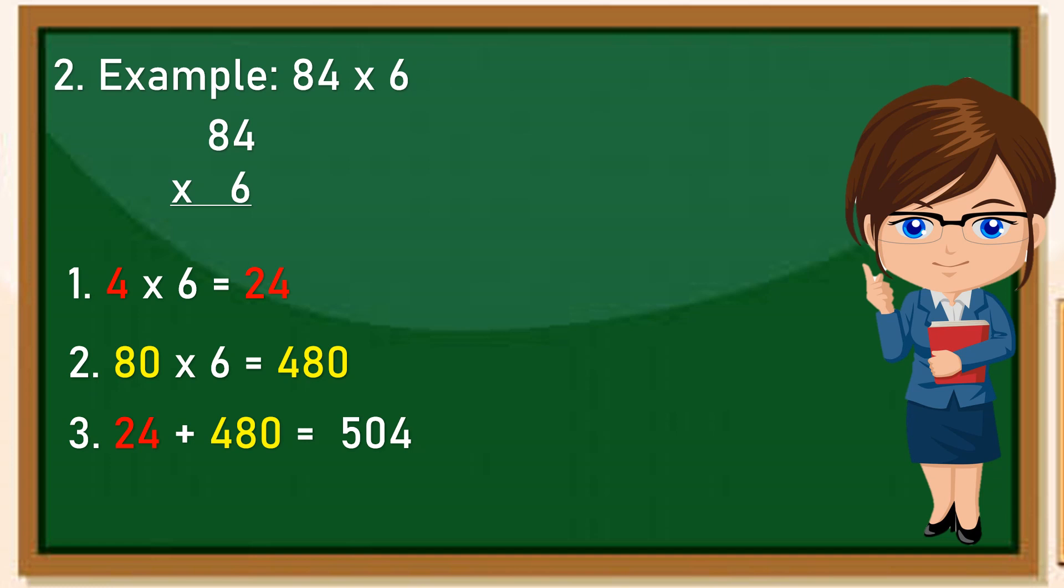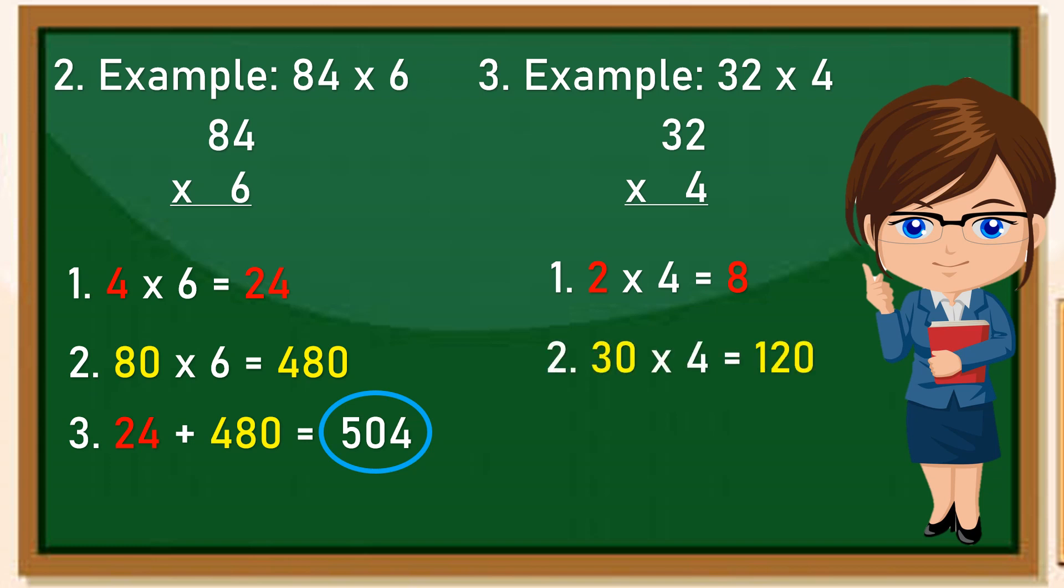Therefore 84 times 6 is 504. Example number 3: 32 times 4. So din lang po yung mga steps na nabanggit. So we have 2 times 4 is 8, 30 times 4 is 120, then add 8 plus 120 is 128. Simple at napakadali. Ikaw, kaya mo na ba?